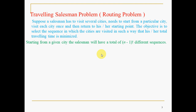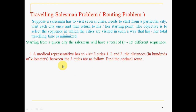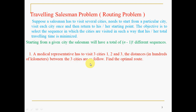The procedure of solving the Traveling Salesman Problem is very similar to solving an assignment problem, with one additional condition to be satisfied. As an example: a medical representative has to visit three cities — 1, 2, and 3. The distances in hundreds of kilometers between the three cities are given. Find the optimal sequence or optimal route.